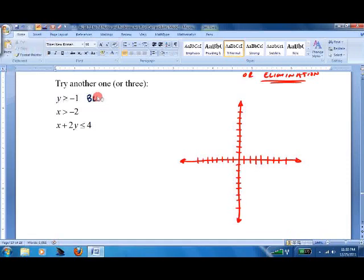Let's graph the first one. We'll put this in blue. y is greater than or equal to negative one. Well, here's negative one. Solid lines. Come across. And greater than is up. So I'll put my little baby arrows here telling me to shade up.